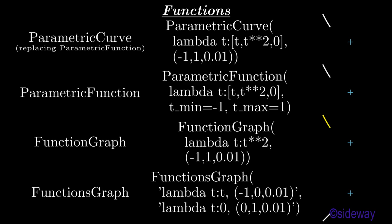A parametric curve or parametric function vectorized mathematical object is used to generate a data curve through specifying the functions of data point elements.